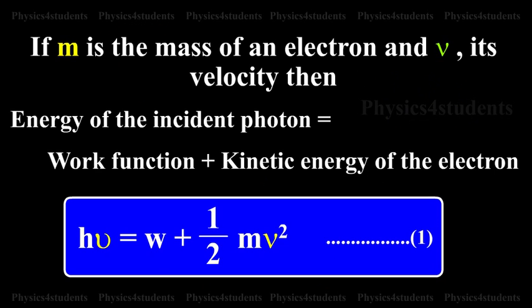then energy of the incident photon is equal to work function plus kinetic energy of the electron. H nu is equal to W plus half Mv square. This is equation number 1.